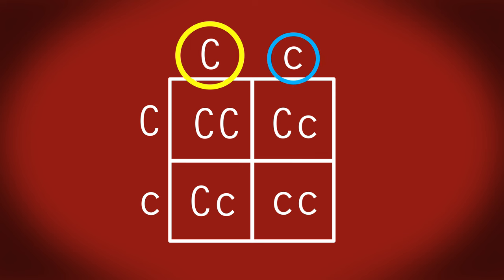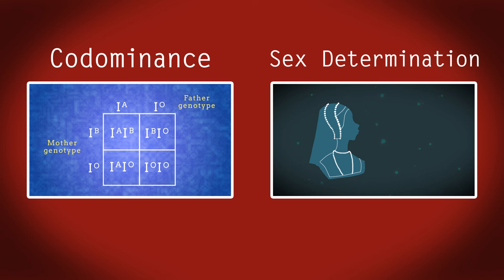So that is Punnett squares. Very useful for looking at the probability of genotypes of offspring. We will look at co-dominance and sex determination in different videos.